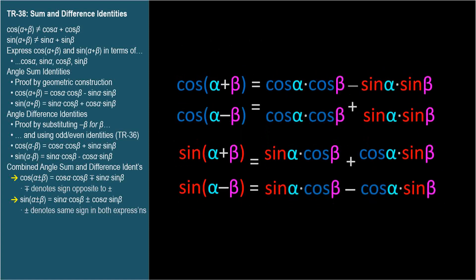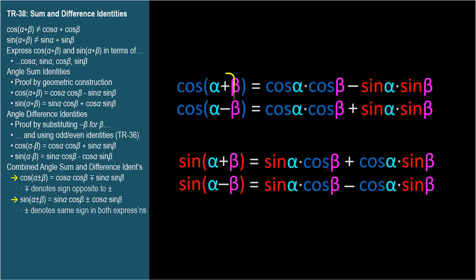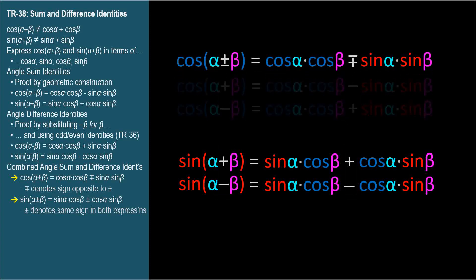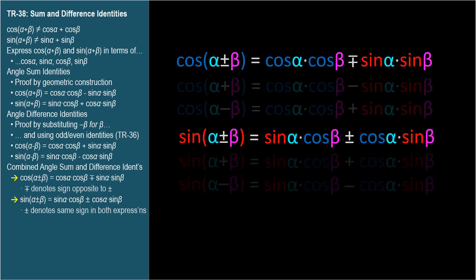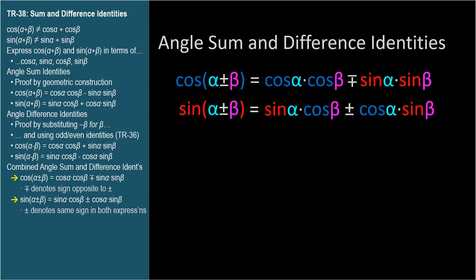Putting the cosines and sines together, we notice that the pairs are the same except for their positive/negative signs. So we can combine the sum and difference identities for cosine into one identity: when we add angles, we subtract the second term, and when we subtract angles, we add the second term. The plus-or-minus and minus-or-plus symbols denote that the signs are opposite. When we combine the identities for sine, the positive/negative signs are the same — adding angles adds the second term, and subtracting angles subtracts it. In the next video, TR-39, we'll test and use these identities.